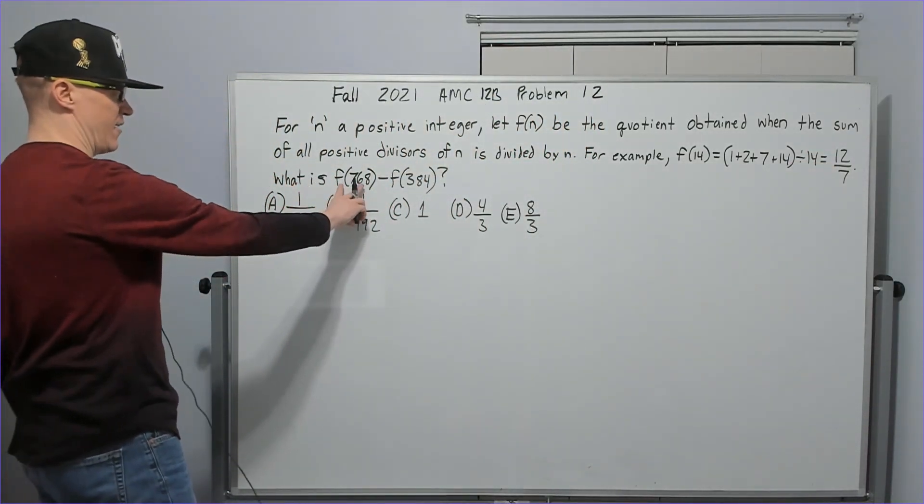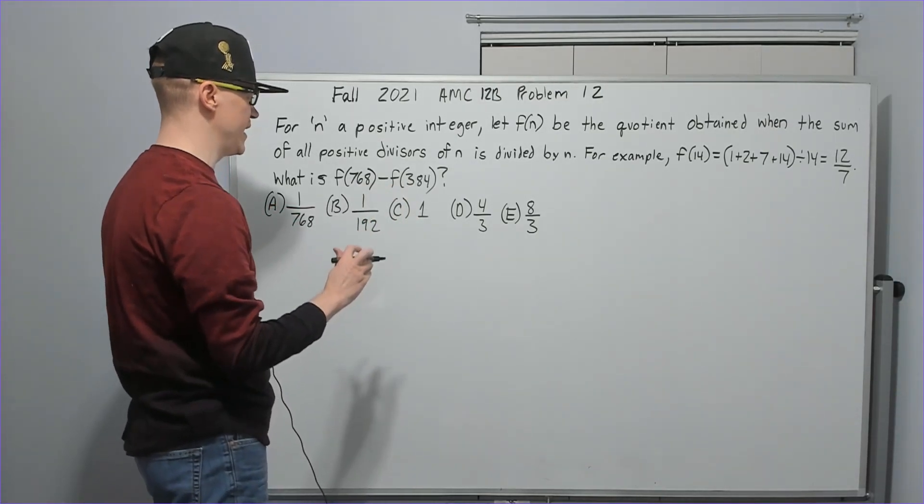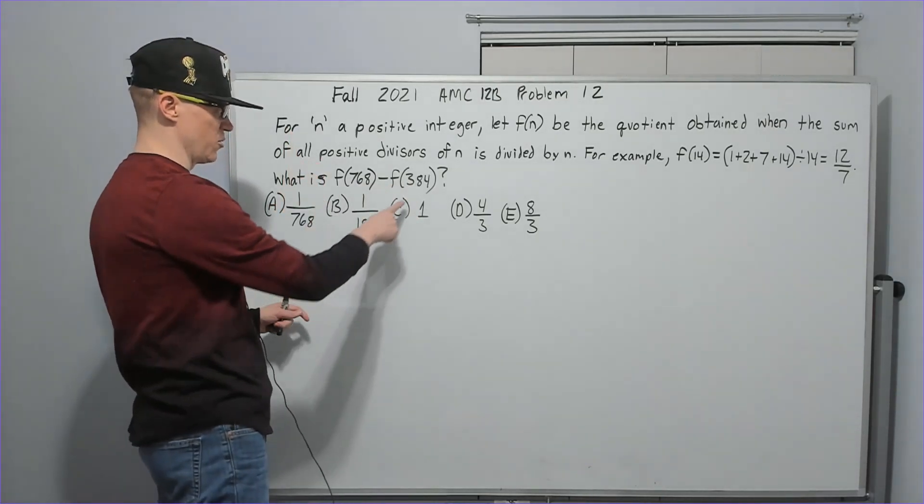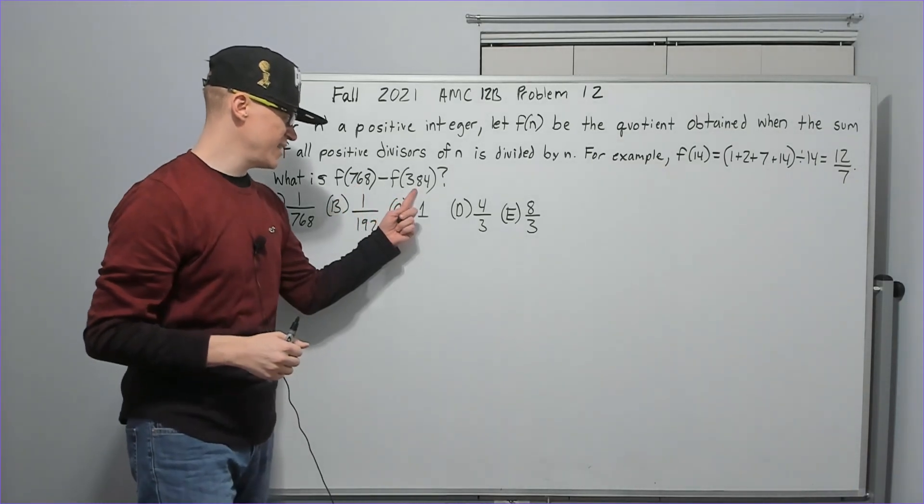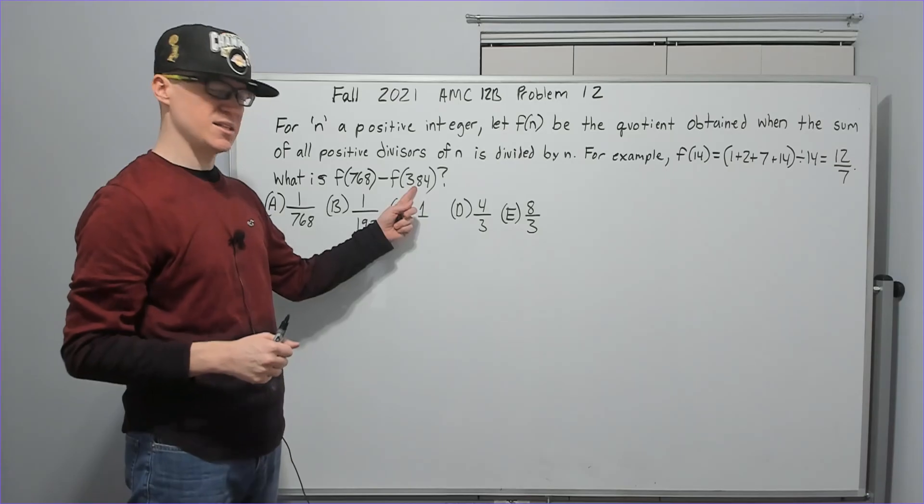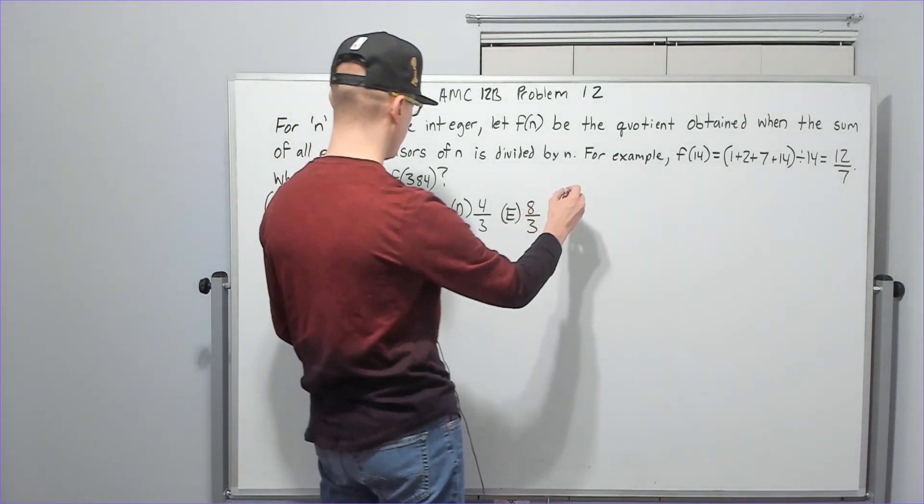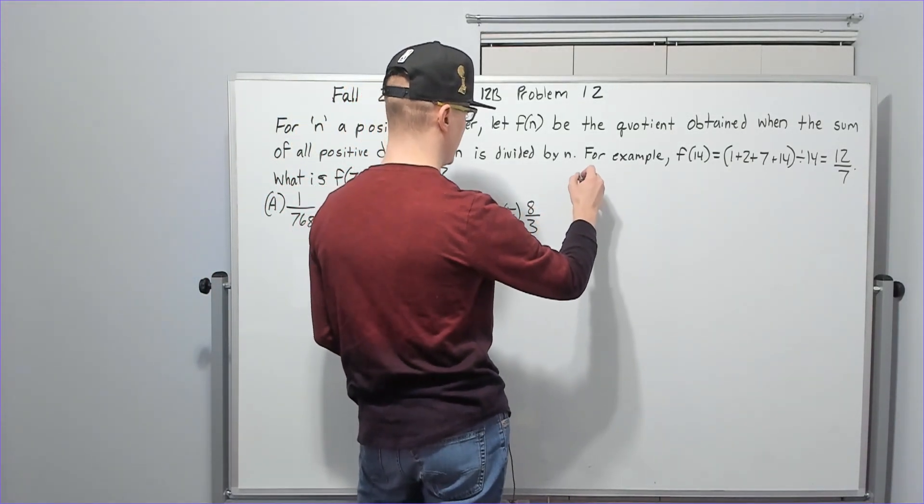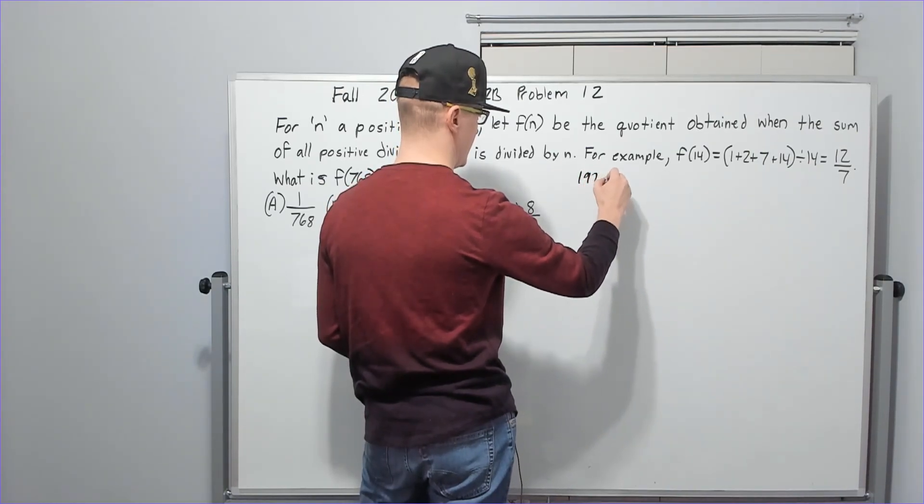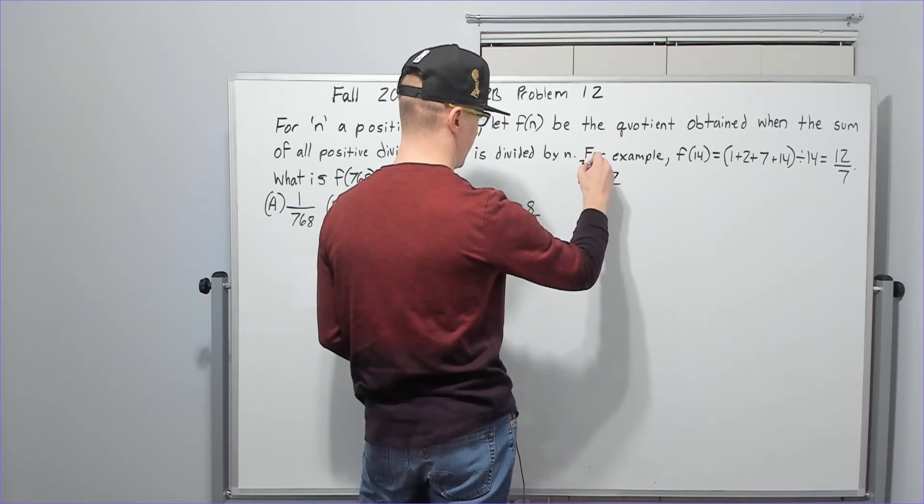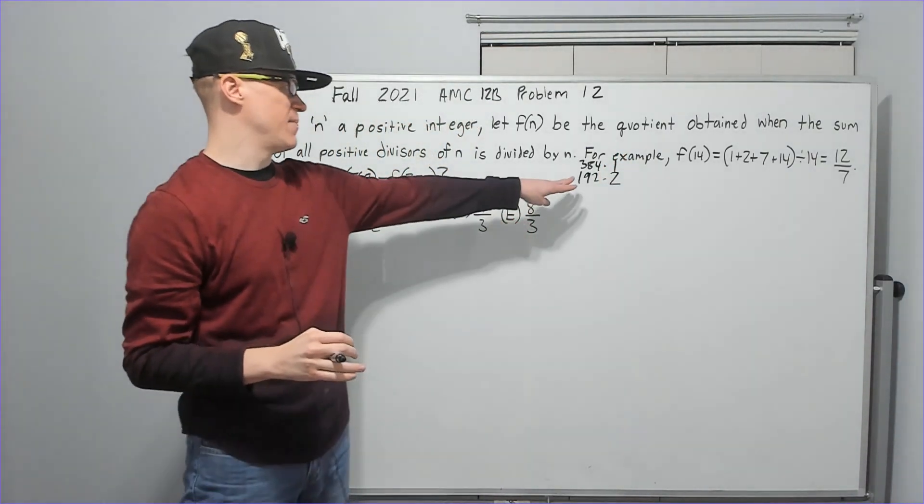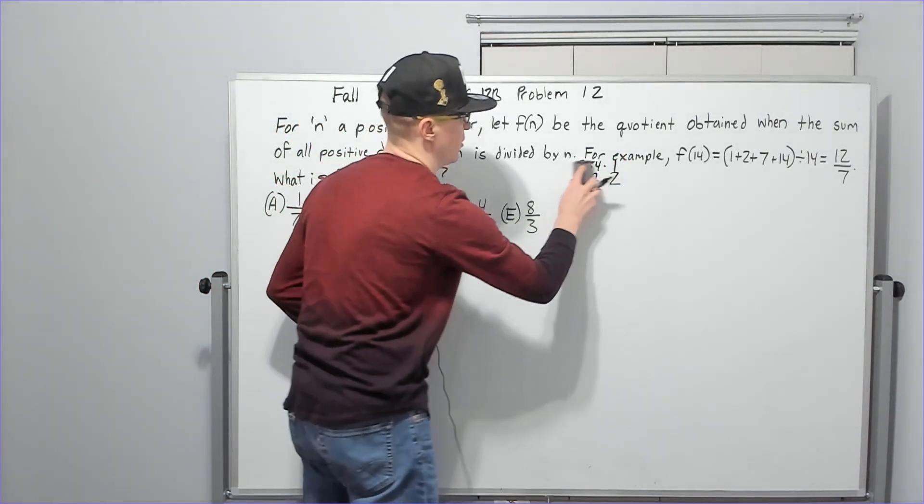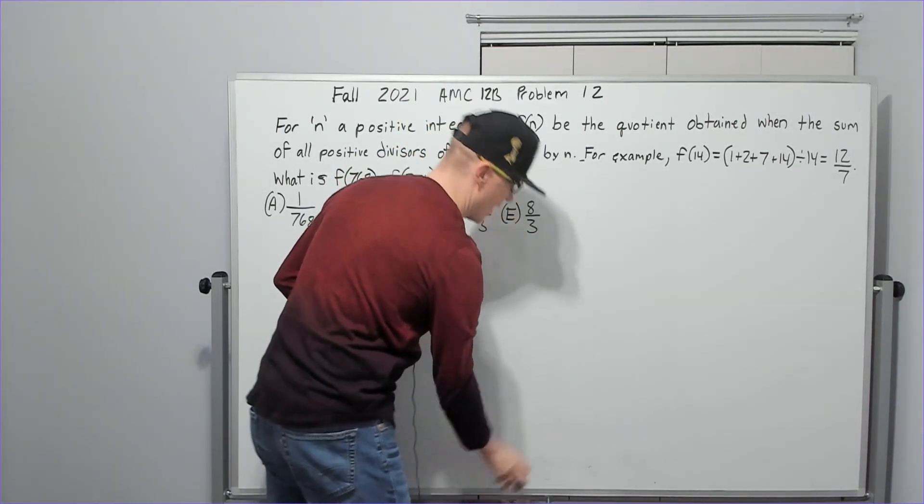What is f(768) minus f(384)? Observation number one: this is half of this. So let's see if we can prime factor this. I notice it's 192 times 2, so I'm going to do that: 192 times 2, and I'm also going to put 384 times 1.